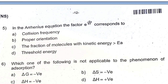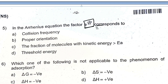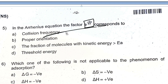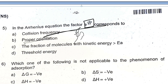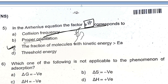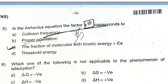In the Arrhenius equation, the factor e to the power minus Ea by RT corresponds to the fraction of molecules having energy greater than the activation energy. This factor indicates the fraction of molecules with kinetic energy greater than activation energy.